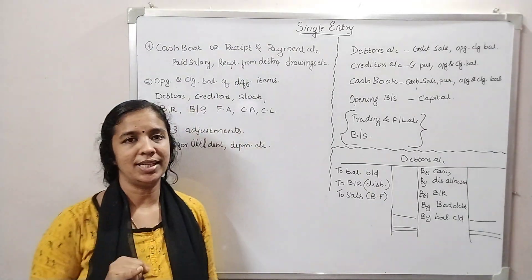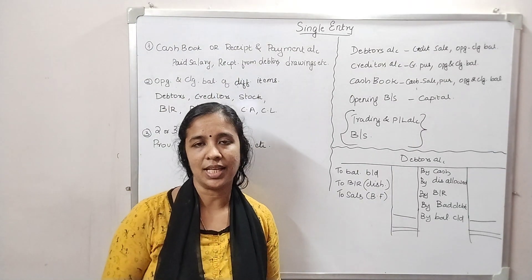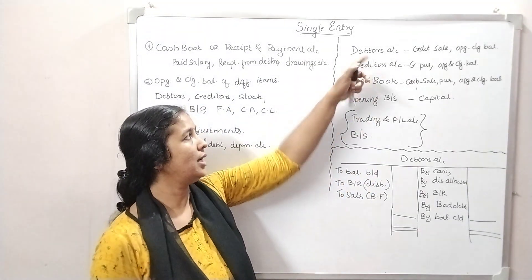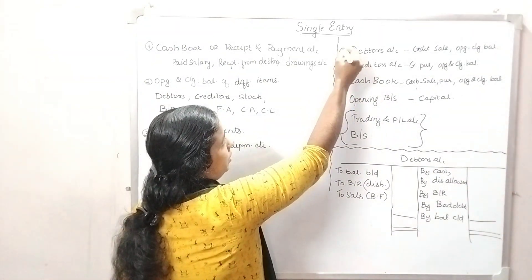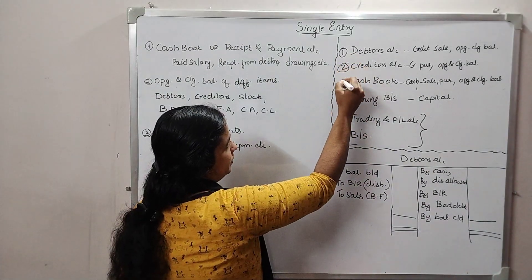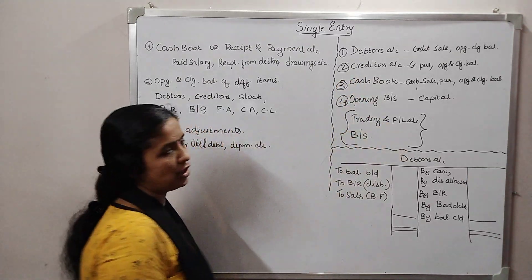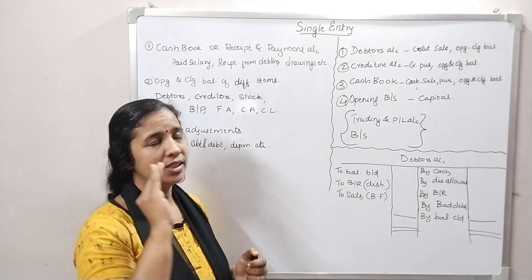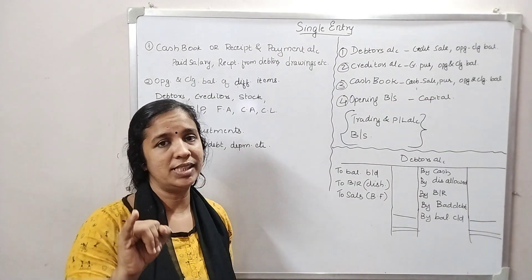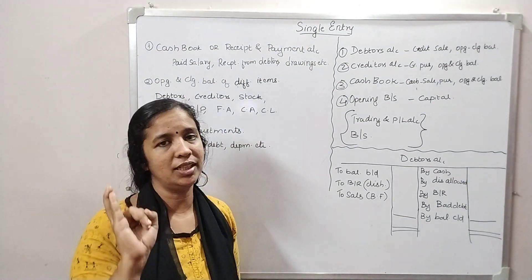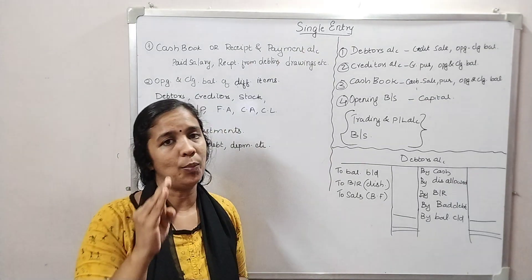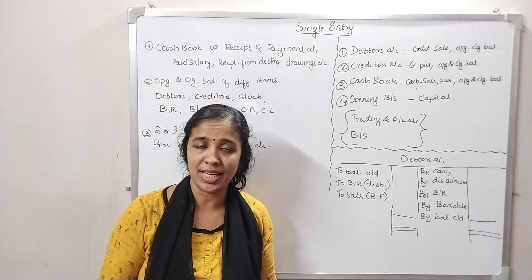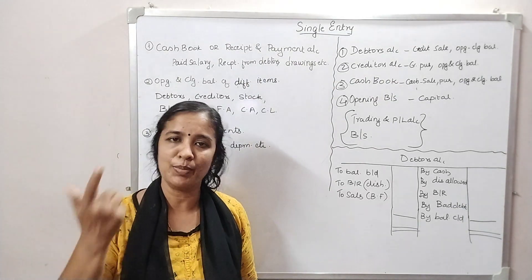The main items are the debtors account, creditors account, cash book, and opening balance sheet. We usually prepare the creditors account. For the cash book we need: credit purchases, cash purchases, open amounts of cash, and close amounts of cash.